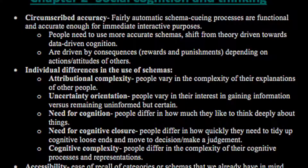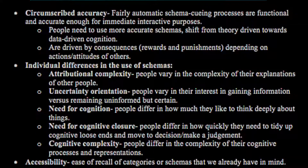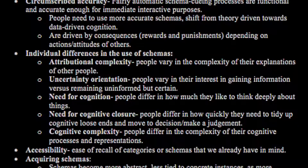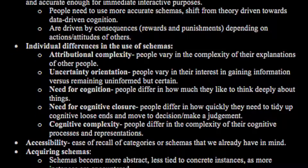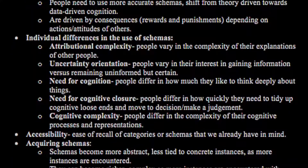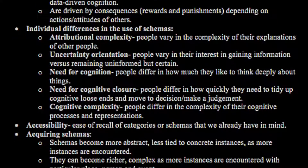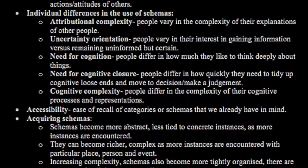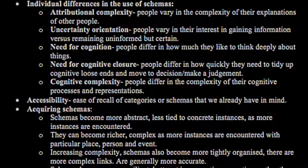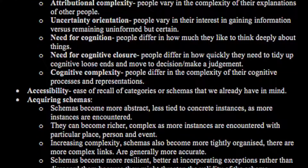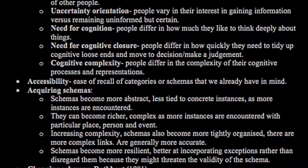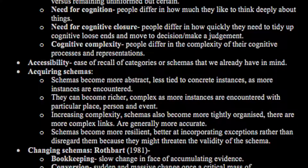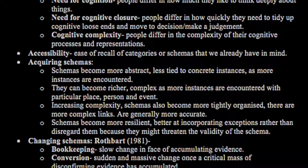There are individual differences in the use of schemas: attributional complexity — where people vary in the complexity of explanations of others; uncertainty orientation — where people vary in interest in gaining information about certainty of others; need for cognition — where people differ in how much they like to think deeply; and need for cognitive closure — where people differ in how quickly they need to tidy up cognitive loose ends and move to a decision. Cognitive complexity refers to differences in the complexity of cognitive processes and representations. Accessibility is the ease of recall of categories or schemas already in mind. Schemas become more abstract and less tied to concrete instances as more instances are encountered, can become richer and more complex with experience, and become more resilient — more difficult to change once reinforced.